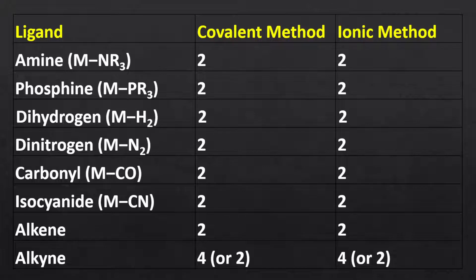There are two methods for evaluating the effective atomic number of organometallic compounds: a covalent method that considers both metal and ligand as neutral atoms while evaluating electron count, and an ionic method that considers the oxidation state of the metal and charges on the ligand while evaluating electron count. The covalent method is quite convenient and easy to use, and I always recommend it to my students.